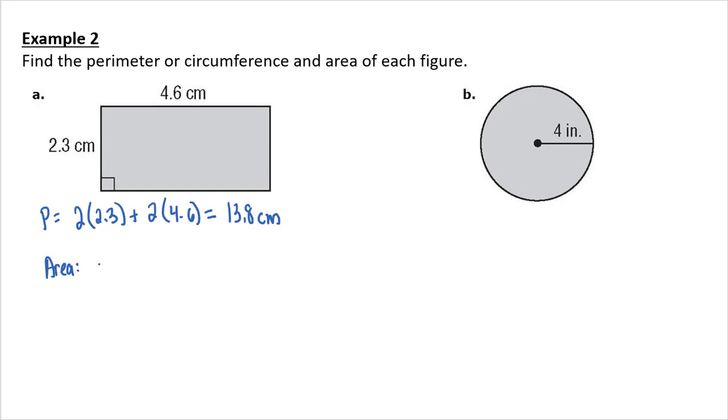Area. Area of a rectangle is 2.3 times 4.6. And that is 10.58, and that's centimeters squared. So, that's how many little 1 by 1 centimeter squares I can put in this little rectangle.